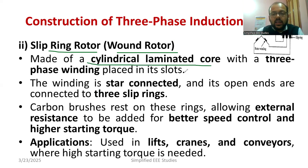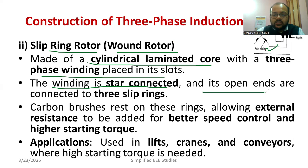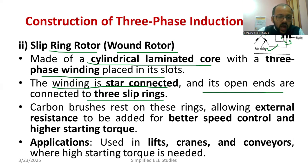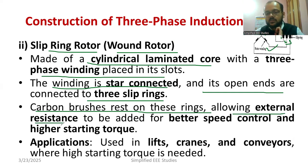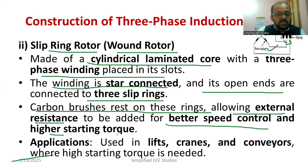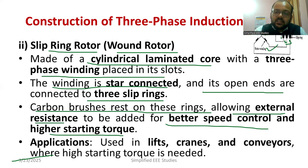A slip ring induction motor is made up of a cylindrical laminated core with three-phase windings placed in its slots. The winding is star connected and linked to three slip rings. Carbon brushes rest on the rings, allowing connection of external resistance. It is suitable for better speed control and higher starting torque applications. However, the major setback is that as external resistance increases, losses also increase and efficiency drops.